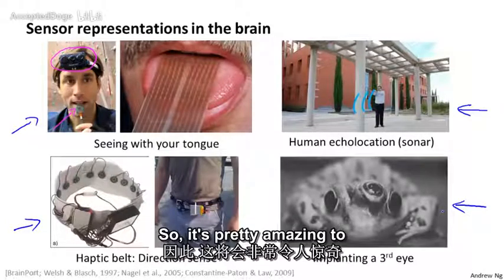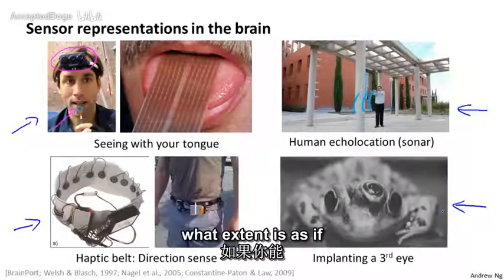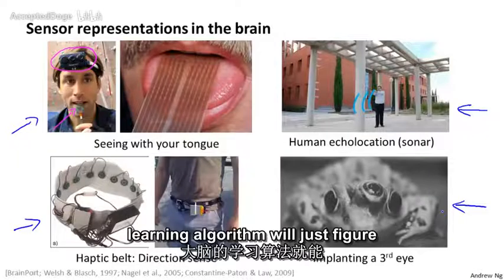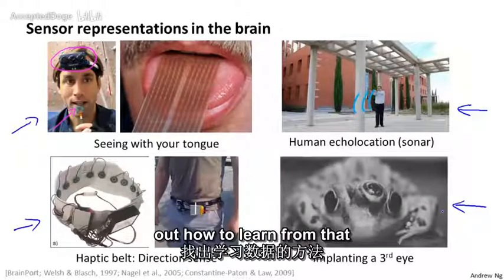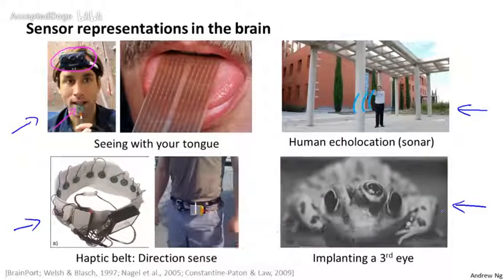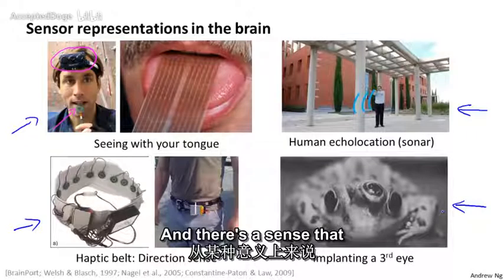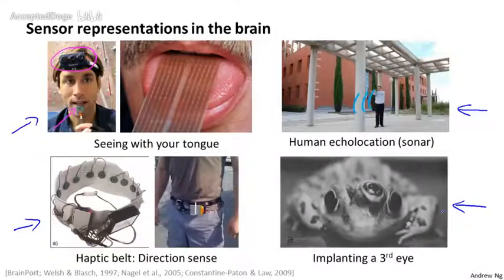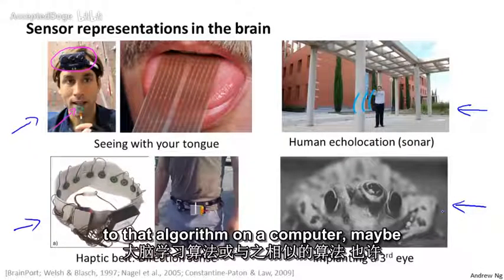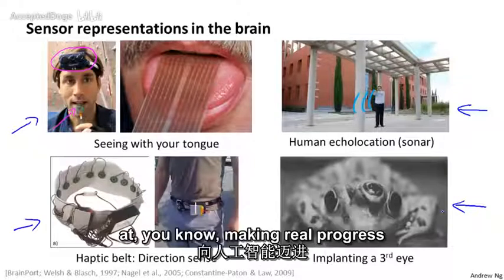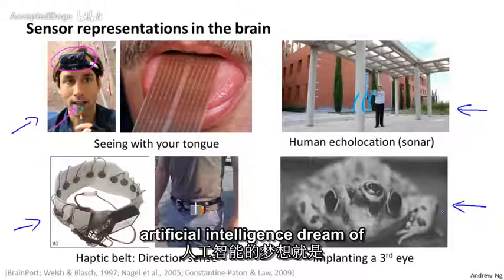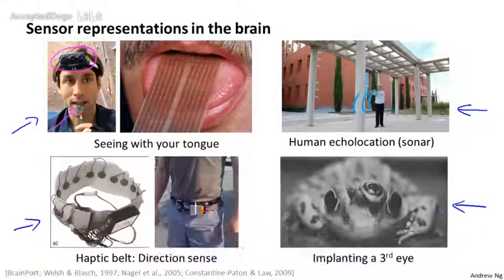So it's pretty amazing to what extent you can plug in almost any sensor to the brain and the brain's learning algorithm will figure out how to learn from and deal with that data. There's a sense that if we can figure out what the brain's learning algorithm is and implement it or implement some approximation on a computer, maybe that would be our best shot at making real progress towards the artificial intelligence dream of someday building truly intelligent machines.